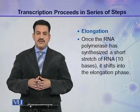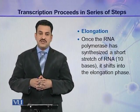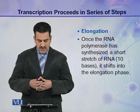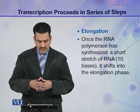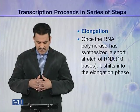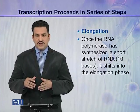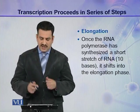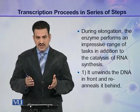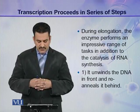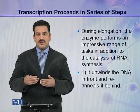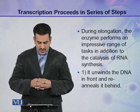The second step of transcription is called elongation. Once the RNA polymerase has synthesized a short stretch of RNA — about 10 bases — it shifts into the elongation phase. During elongation, as the name indicates, the enzyme performs the synthesis of the RNA molecule, in addition to a number of impressive tasks.